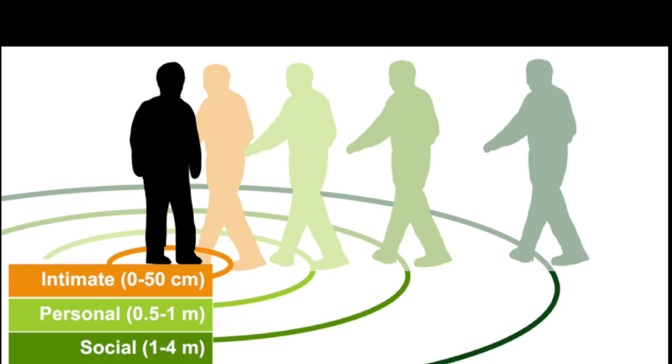The intimate zone is around 0 to 50 centimeters from you, and this zone is only reserved for close relationships such as family members, romantic partners, or in some cases close friends. Entering someone's intimate zone without permission can cause discomfort.